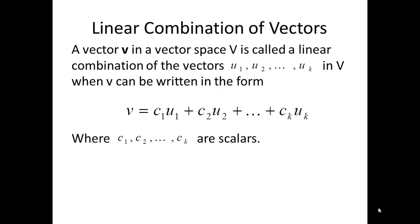Firstly, linear combination of vectors. A vector V in a vector space is called a linear combination of other vectors in that same vector space, namely U1, U2, ..., UK, if I can write V in the form V equals C1·U1 plus C2·U2 plus ... plus CK·UK, where the CIs are scalars — they're real numbers.